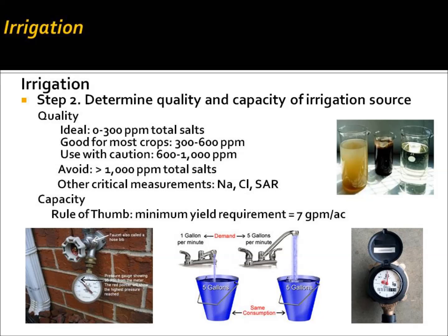Once we've located a source of water, it's important to test it and determine the quality and capacity of that irrigation source. Water testing is great for determining whether you have salts or sodium content that would make it unsuitable for irrigation. If sodium or salt content is between 0 and 300 parts per million, that's ideal. Most crops will handle 300 to 600, but anything over 600 should be used with caution, and over 1,000 should be avoided. Some critical elements to look at are sodium chloride and the sodium absorption ratio, which is a ratio of the soil's damage caused by sodium from the water. A good rule of thumb is you need at least 7 gallons per minute per acre.